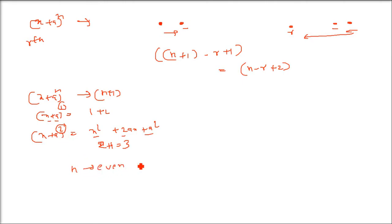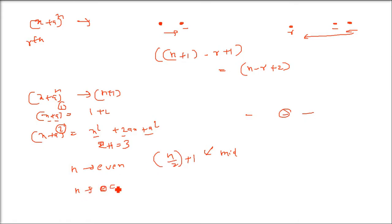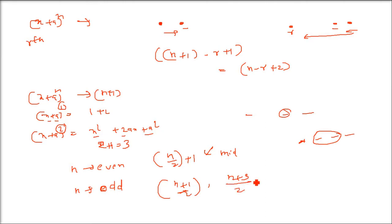If n is even, the expansion has n+1 (odd) terms, so there is one middle term: the (n/2 + 1)th term. If n is odd, the expansion has an even number of terms, so there are two middle terms: the (n+1)/2 th and the (n+3)/2 th terms. This is how you find the middle term.